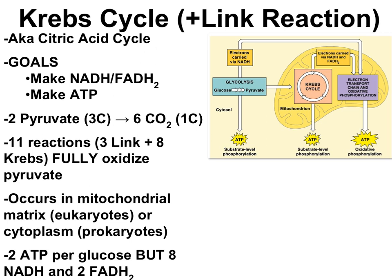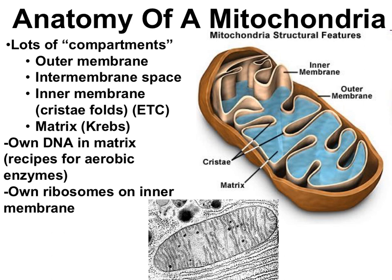Regardless of what you call it, the goal of the Krebs cycle reactions is to generate high energy compounds — ATP, NADH, and a related molecule called FADH2. Together, the link reaction and Krebs cycle consist of 11 chemical reactions, all enzyme-catalyzed. All of the carbon pieces in the form of pyruvate are completely oxidized and broken into one-carbon pieces of carbon dioxide. Overall, the link reaction and Krebs cycle make two ATPs, eight NADHs, and two FADH2s.